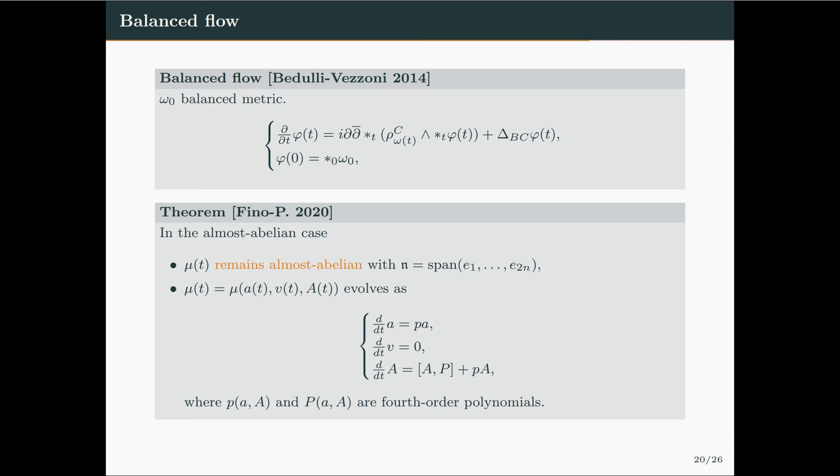So here, I have just rewritten the equation for the balanced flow introduced by Boling and Vezzoni. In the almost abelian case, we studied the bracket flow, and we show that if we start from an almost abelian bracket, then the solution of the bracket flow will remain almost abelian for all times. And so we can write the evolution equation in terms of the evolution equations of the algebraic data. And this will be given by this system of equations, where little p and big P are fourth-order polynomials in a and big A, whose precise expression we write in the paper.